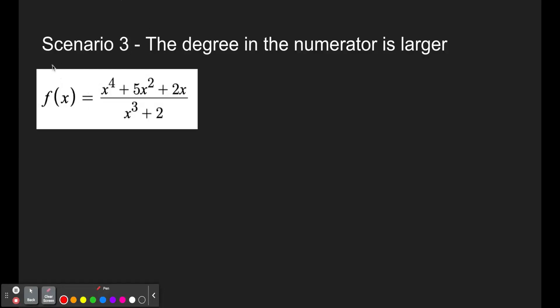In this third video, hopefully you've watched one and two, we are still having the same idea here. We're trying to figure out how to find a horizontal asymptote just by looking at the equation. This last scenario is where the degree in the numerator, so here it would be x to the fourth, is larger than the one in the denominator. Here it would be x to the third.